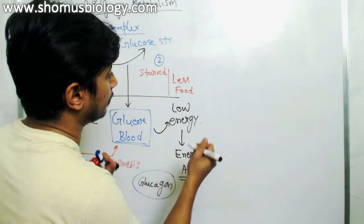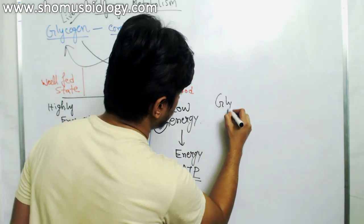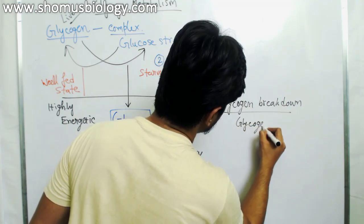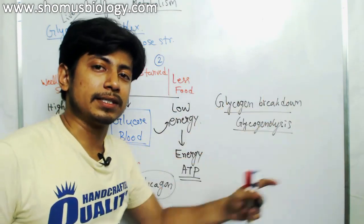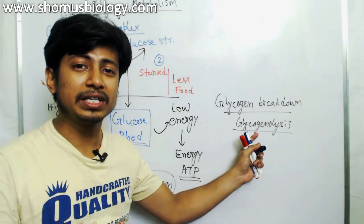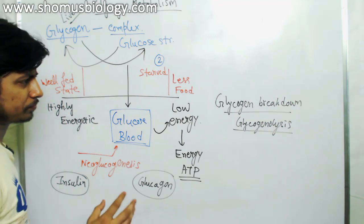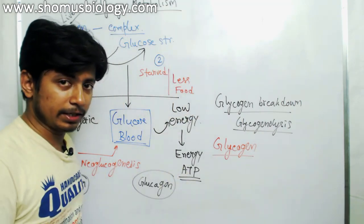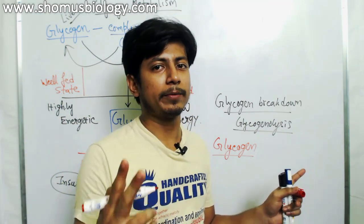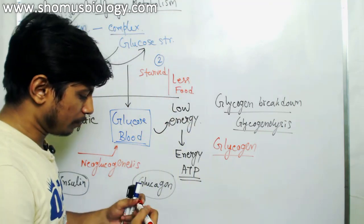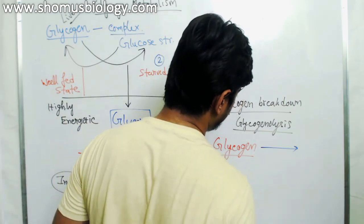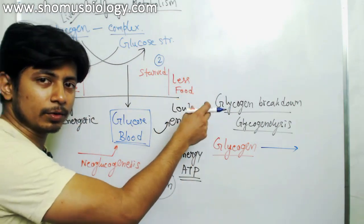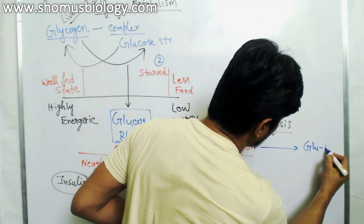When we talk about glycogen breakdown, we also call it glycogenolysis — lysis means breakdown, so glycogenolysis is the breakdown of glycogen. Glycogen is stored in two types of tissues: liver and muscle tissues. Using enzymes, we break the glycosidic bonds and linkages between each glucose monomer, and that gives us glucose-1-phosphate as the end product.